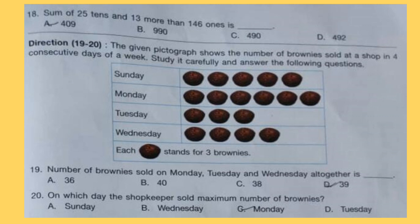Now for questions 19 to 20. The given pictograph shows the number of brownies sold at a shop in 4 consecutive days of a week. Study it carefully and answer the following questions. Question 19: Number of brownies sold on Monday, Tuesday and Wednesday altogether is dash.